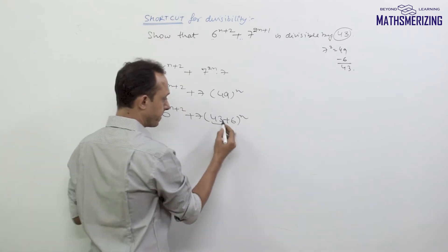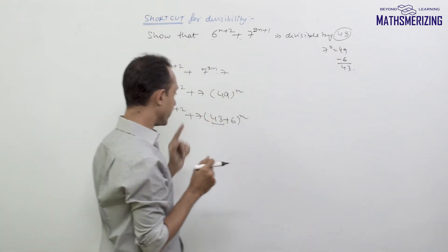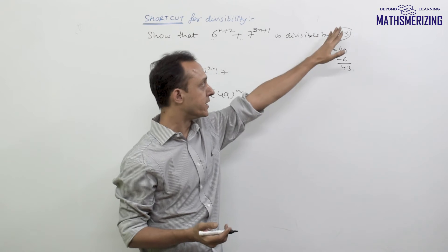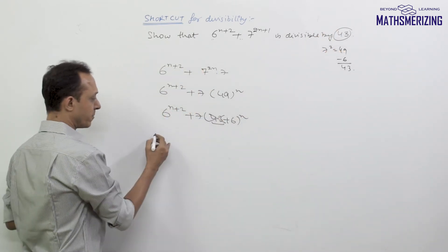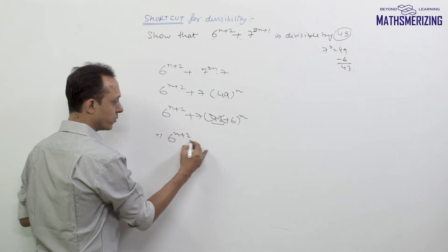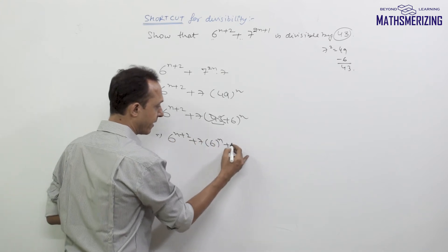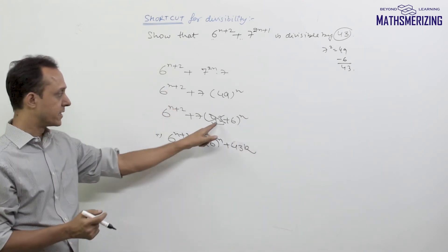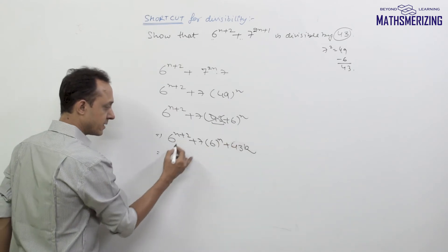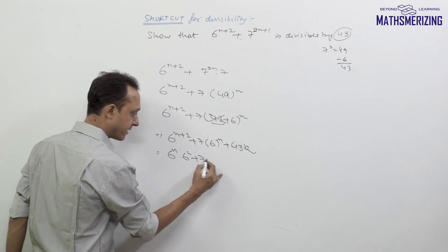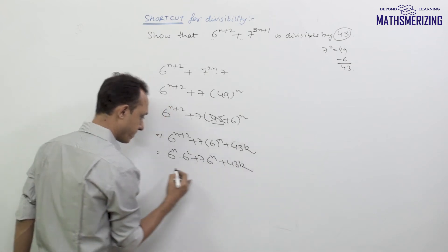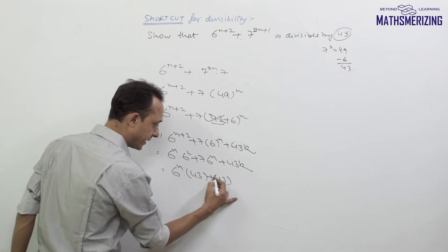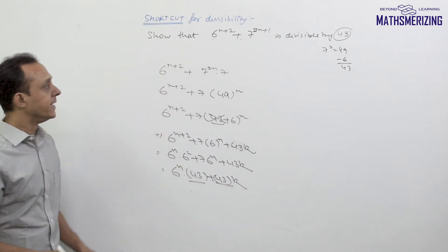Now this number 43 — we have to look for the multiples of 43. All the terms containing 43 or any higher power of 43 will be divisible by 43, so I have no interest in them. So I'll simply discard this term and write: 6^(n+2) plus 7 into 6 to the power n, plus some terms which are multiples of 43. This gives 6 to the power n into 6 squared, plus 7 into 6 to the power n, plus 43k. So it'll be 6 to the power n and 36 plus 7 is simply 43, plus 43k. So this number is clearly divisible by 43.